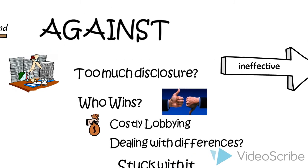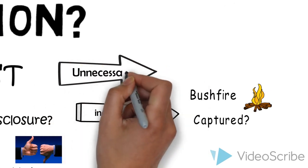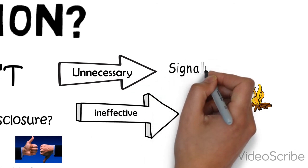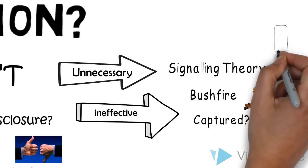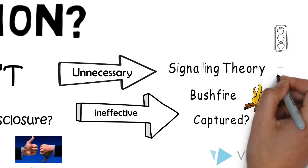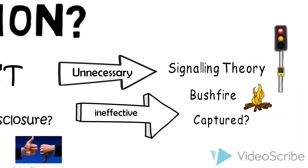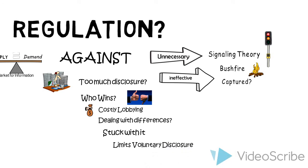Another argument is that regulation is not necessary at all, based on signaling theory. We know that managers have incentives to voluntarily disclose information to the market in order to reduce the cost of capital. Furthermore, they have incentives to do it honestly, because the market will punish the business and the manager if they try to fool it.